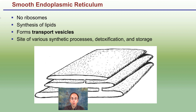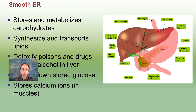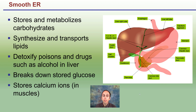The smooth ER, as you can see in this picture, has a smooth appearance but still has many folds. Because it has basically no ribosomes, synthesis of lipids occurs there and it forms transport vesicles. It is the site of various synthetic processes and can also detoxify and store things. Specifically, the smooth ER stores and metabolizes carbohydrates, synthesizes and transports lipids, and detoxifies poisons and drugs such as alcohol in the liver.